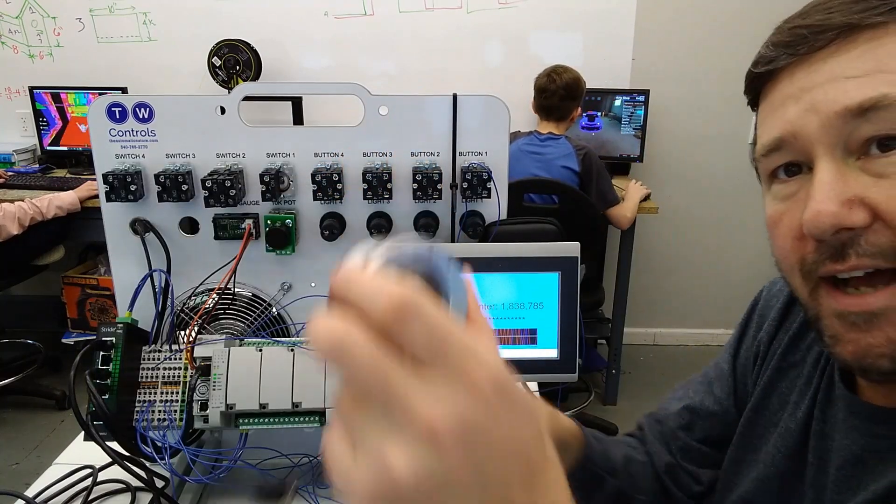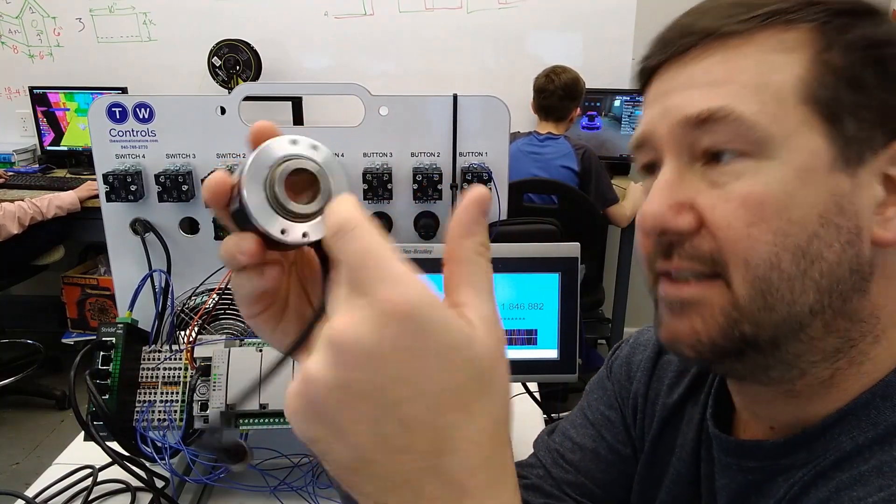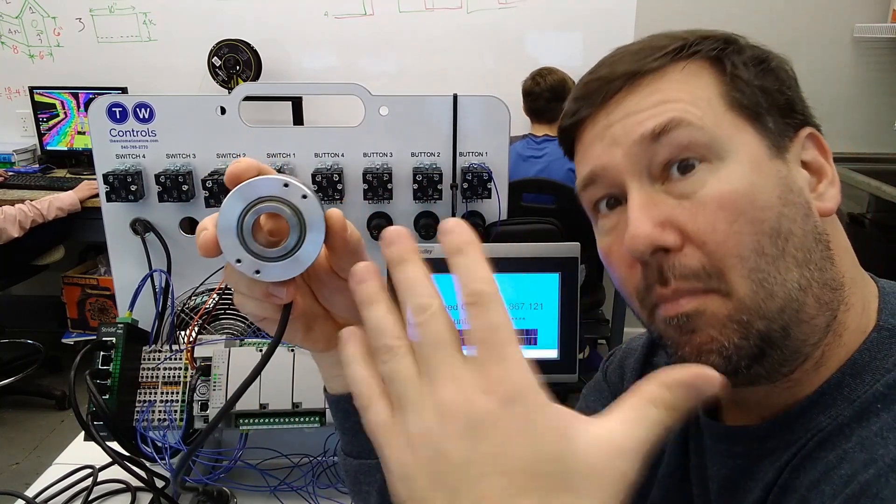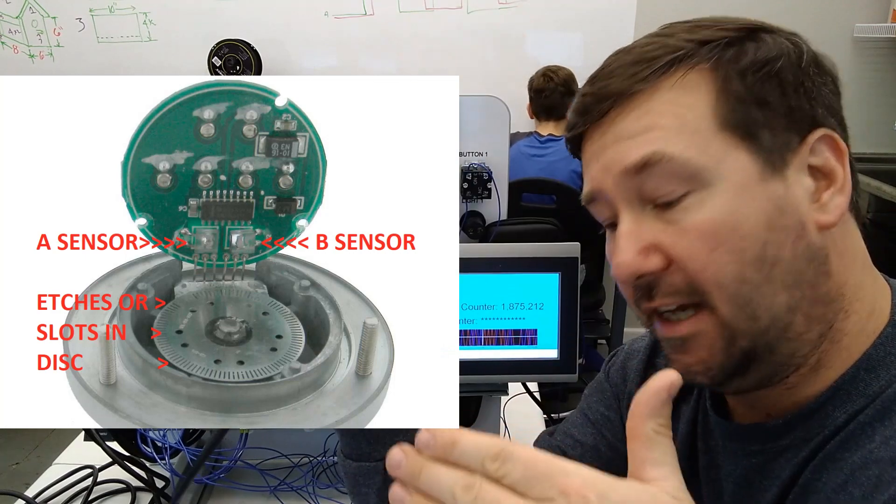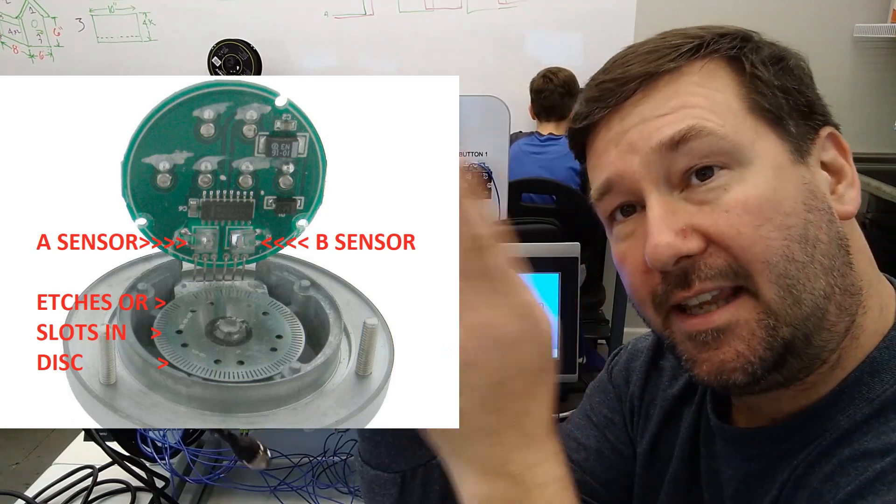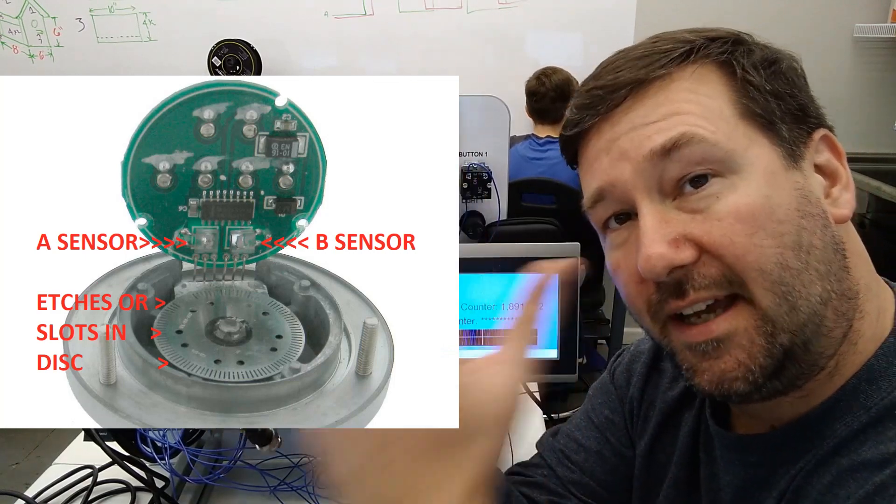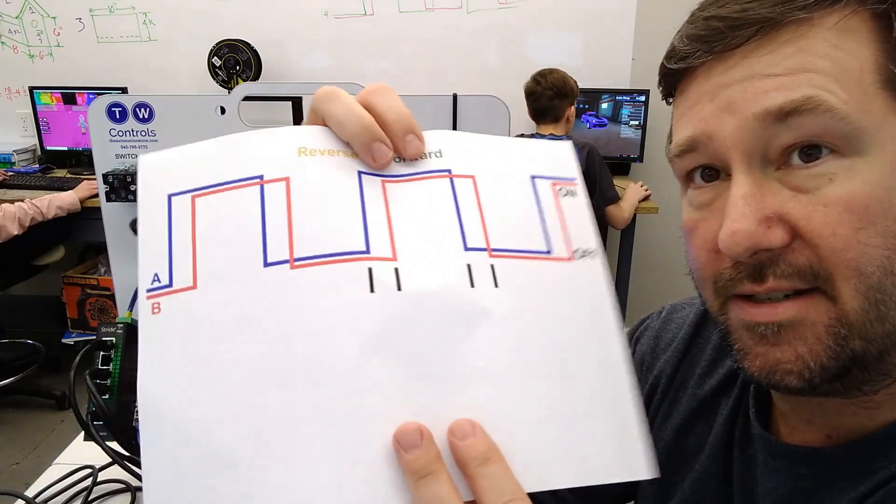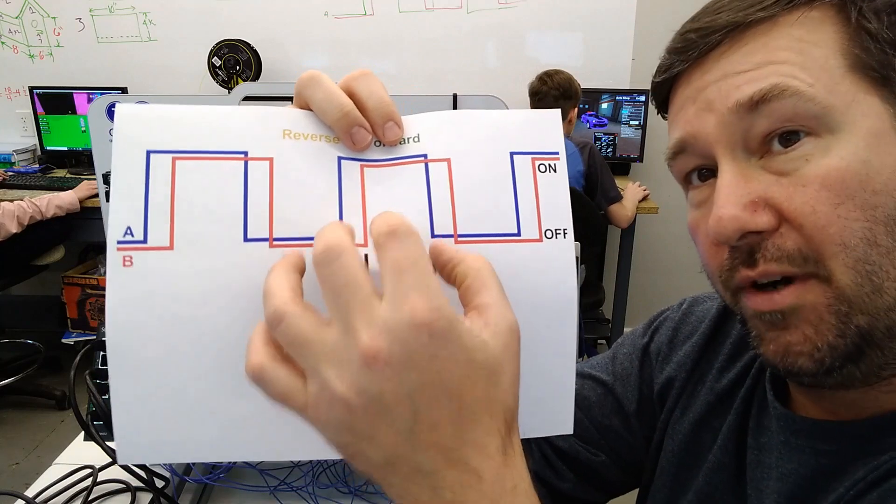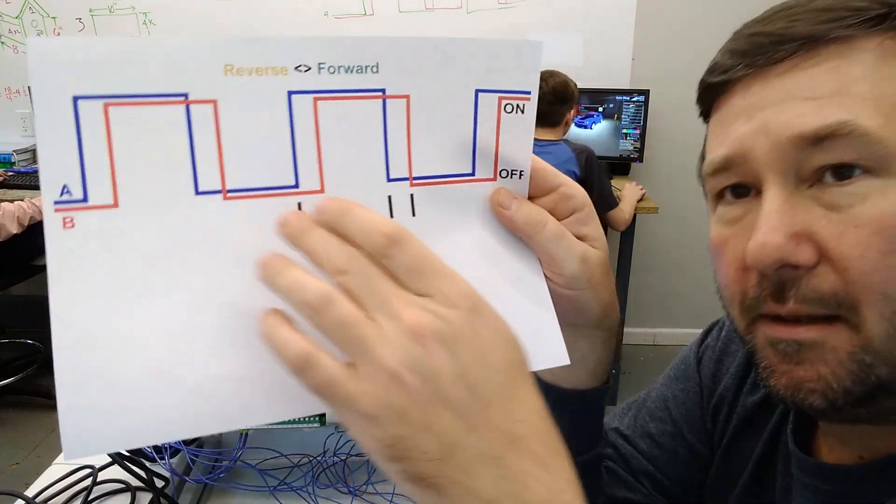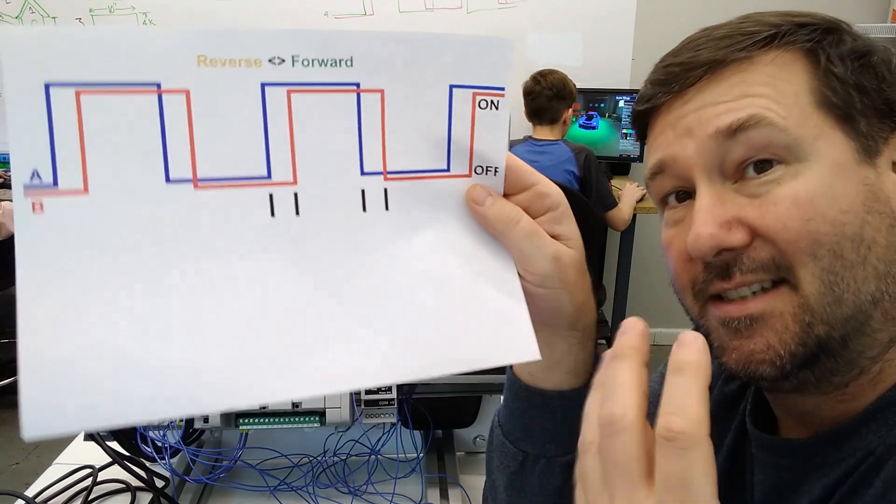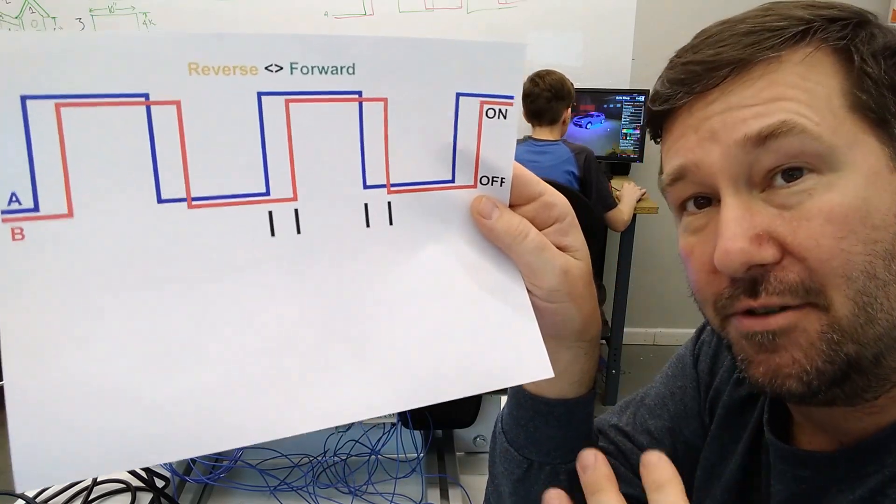And so inside of our encoder, in this case, there are 1024 marks that it can go up and down on. And then the A and B are offset 90 degrees. And so on our page, that means that they're offset 25%. These up down patterns end up making four distinct transitions.